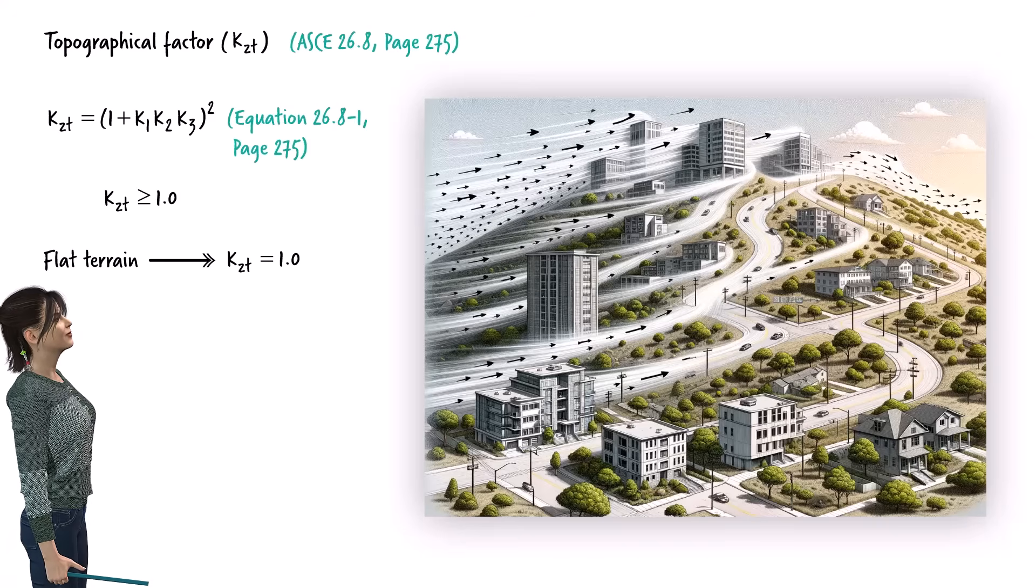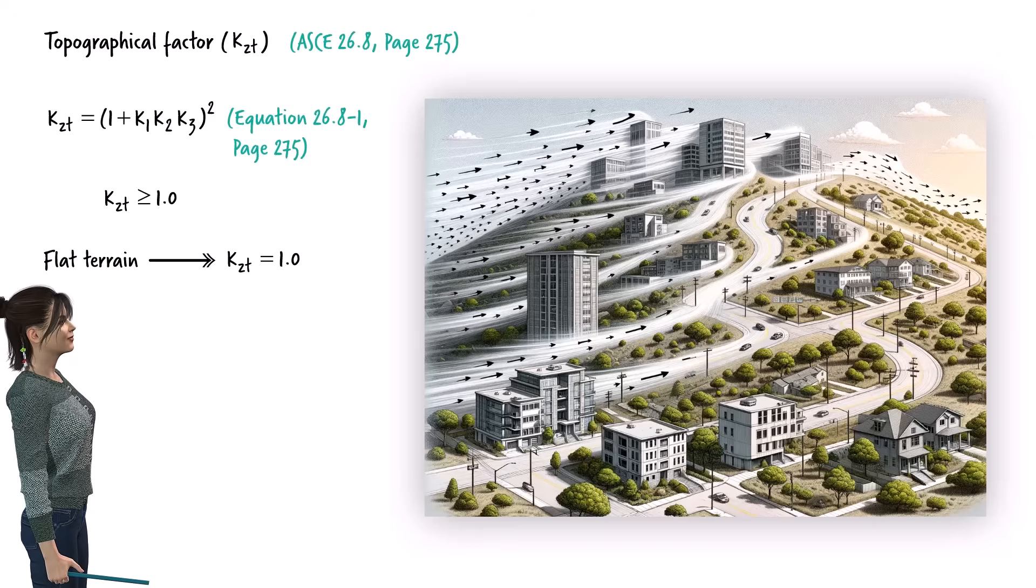In a future lecture, we will investigate a scenario where the structure is situated on a hill, leading to a topographical coefficient greater than 1.